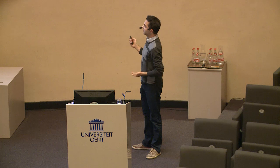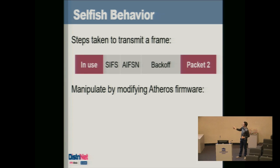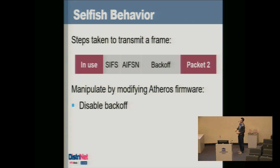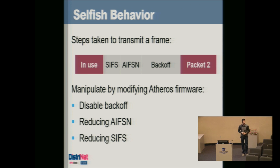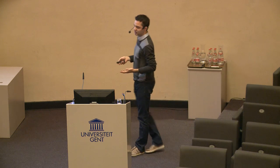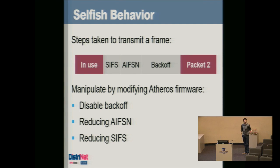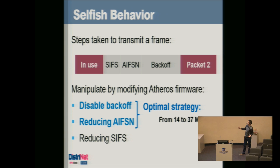Using our cheap Wi-Fi adapters, we can actually change this behavior by modifying the open-source firmware. We can disable the random backoff period. We can also reduce the AIFSN timeout essentially to zero, so an attacker can immediately transmit after the channel is free. After experiments, we found the best attacker strategy is to disable backoff and set the AIFSN period to zero. In one specific instance, this increased bandwidth from 14 megabits to 37 — a very significant increase.